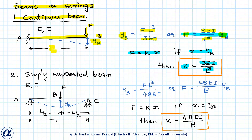Note the configuration of force F and displacement: they are in the same direction, both perpendicular to the length of the beam. This stiffness k equals 3EI over L³ is applicable only when force F is acting at the free end of the beam and the displacement considered is also that of the free end.